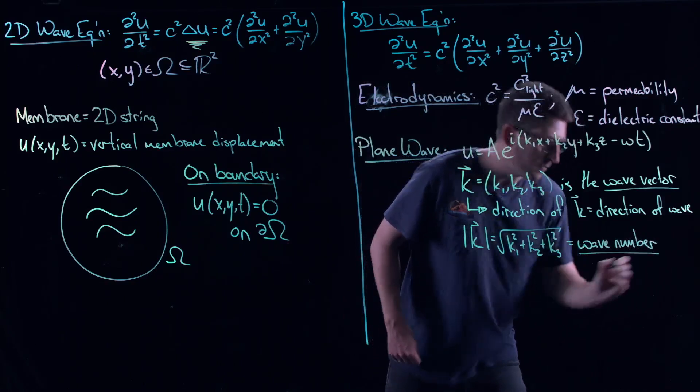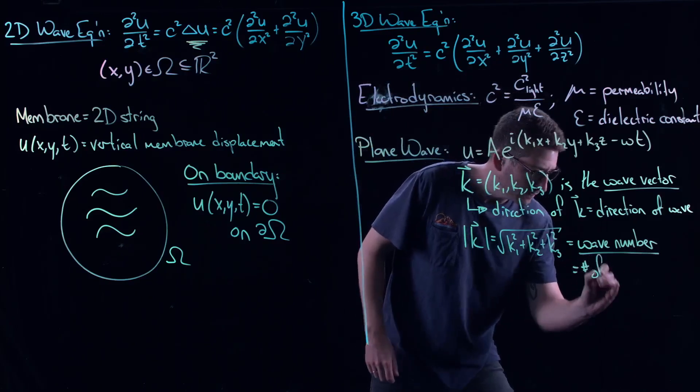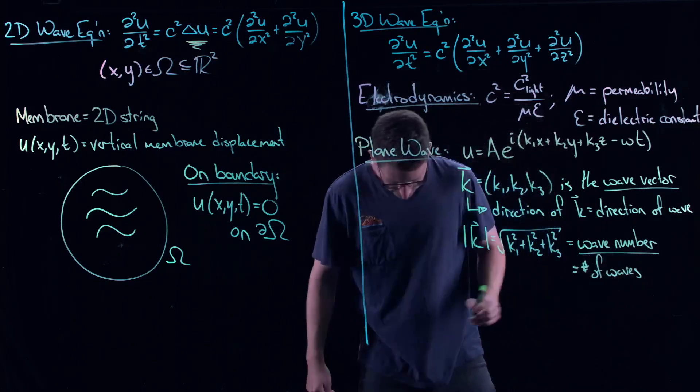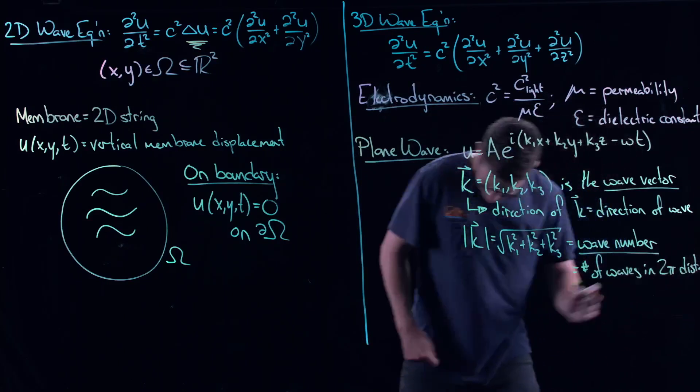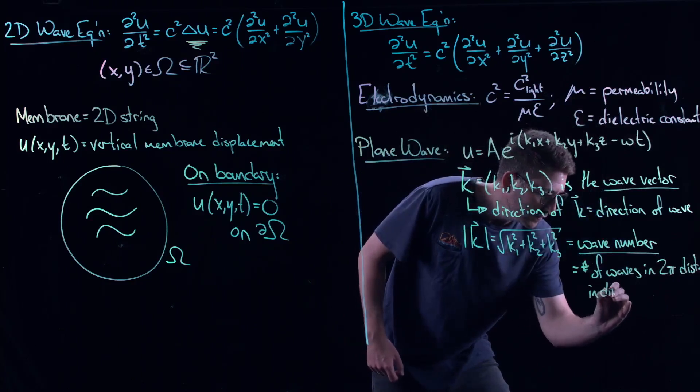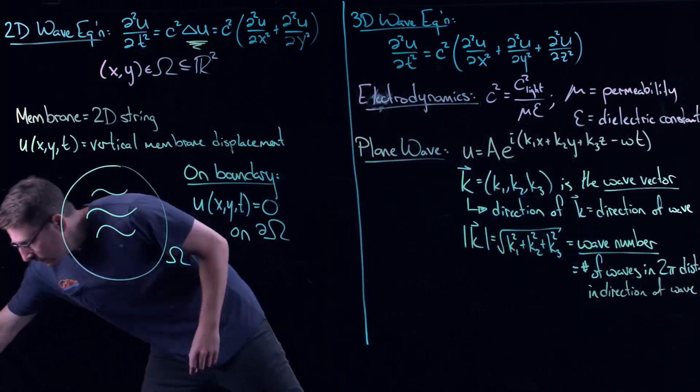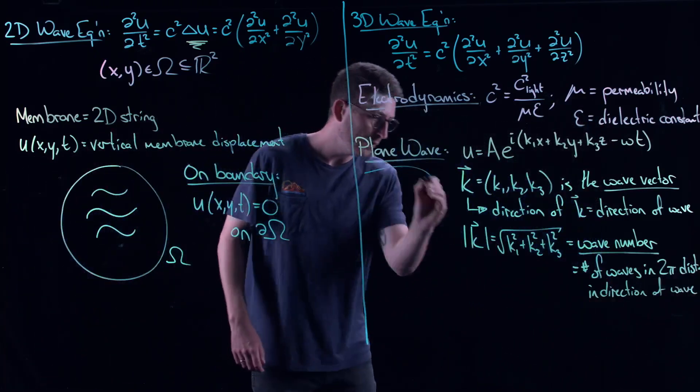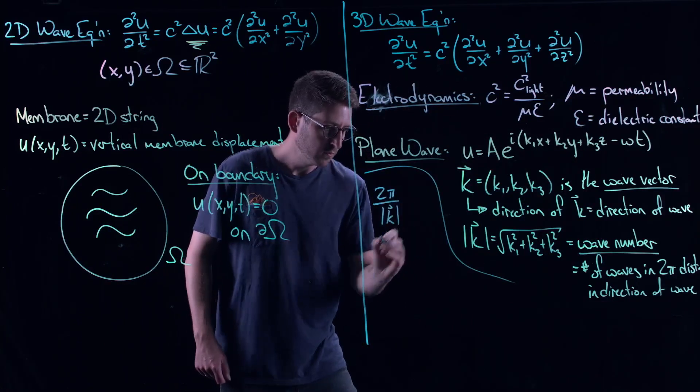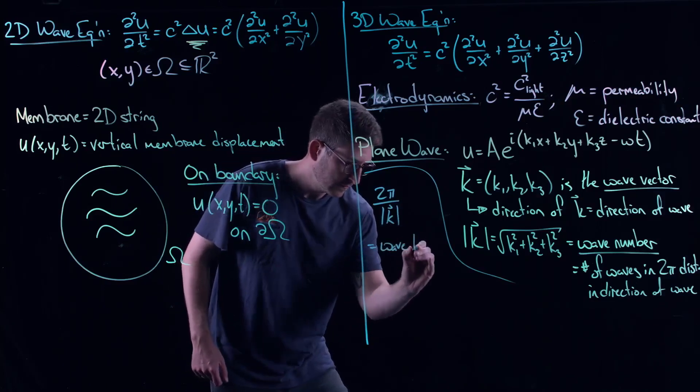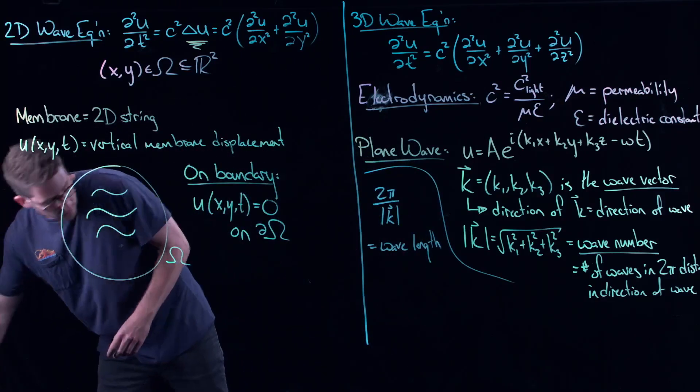And you also can take a look at the magnitude of the vector. So remember, this is just like in Euclidean coordinates. You square all of the components. You sum them up. You take the square root. We call this thing the wave number. So sometimes you'll hear people talk about a wave number. That's all that this thing is. And it's really just equal to the number of waves in a 2 pi distance. So this is a physical quantity in the direction of the wave.